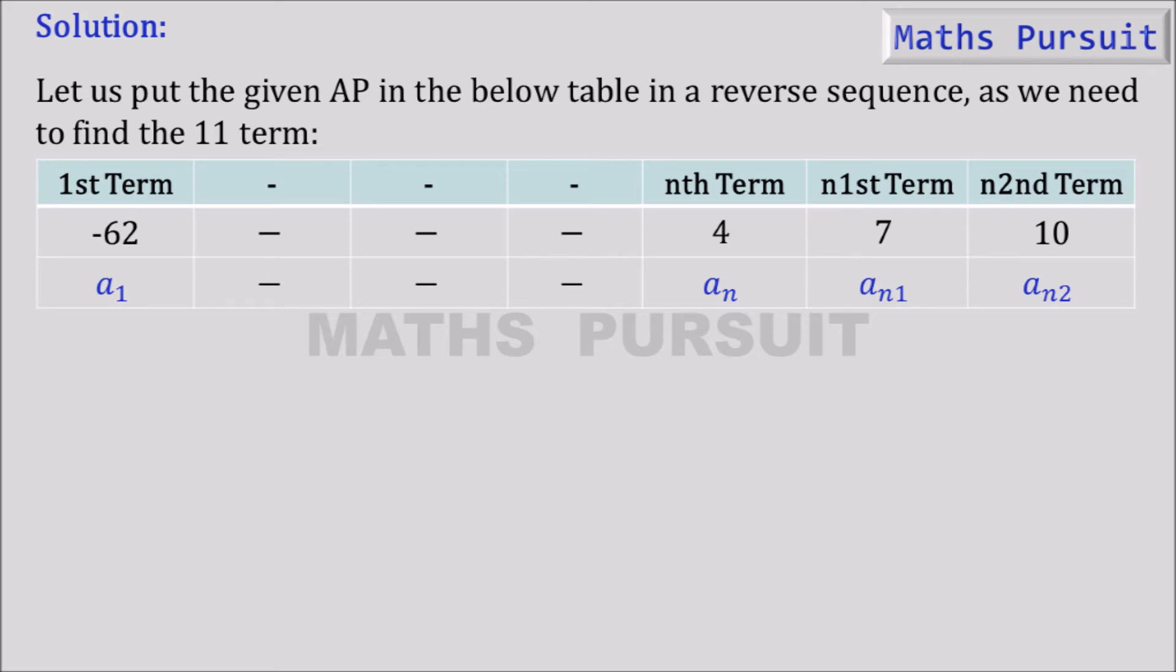Now guys, we are going to find out the common difference. So here we will be finding the common difference from aₙ₂ minus aₙ₁ because the question already says that it is an AP. So any of the consecutive terms we can take and find the common difference. So for that reason, I have taken aₙ₂ minus aₙ₁ and that is equal to 10 minus 7, that is equal to 3.